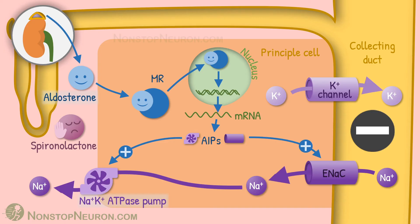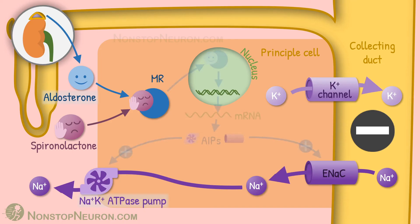Now let's bring in spironolactone. It's a synthetic steroid. It binds with the mineralocorticoid receptor and competitively inhibits binding of aldosterone with the receptor. So the effect of aldosterone is decreased, meaning no synthesis of aldosterone-induced proteins. Therefore, sodium reabsorption is decreased, which produces the diuretic action of spironolactone.